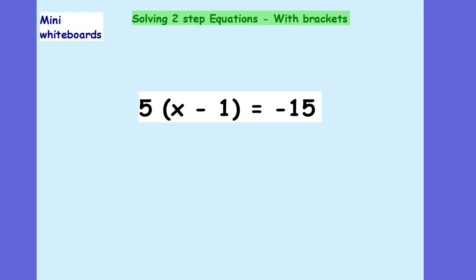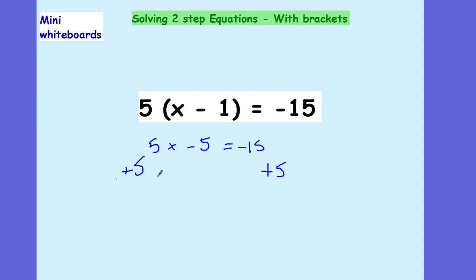Here's another variation. How about now? We've got 5x take away 5 equals negative 15 this time. We're going to add 5 to both sides, which leaves me with 5x equals negative 10. Dividing both sides by 5 tells me that x is equal to negative 2.